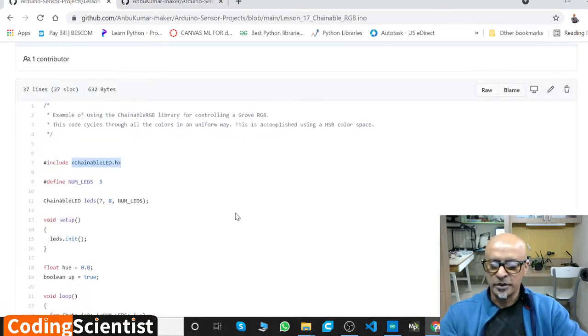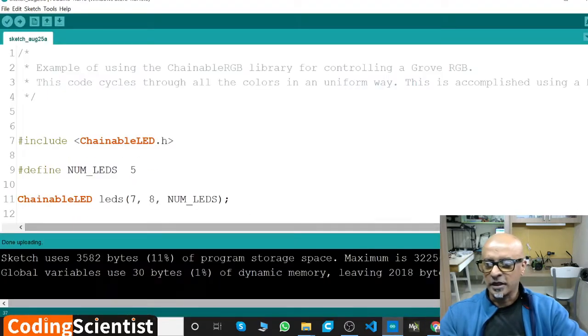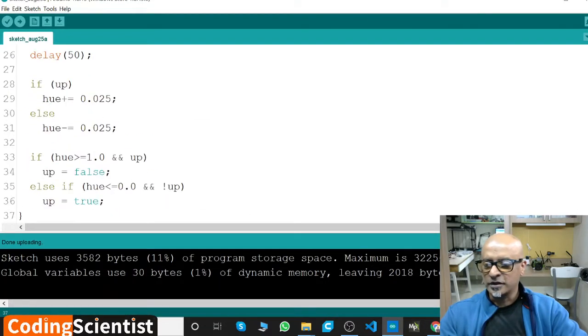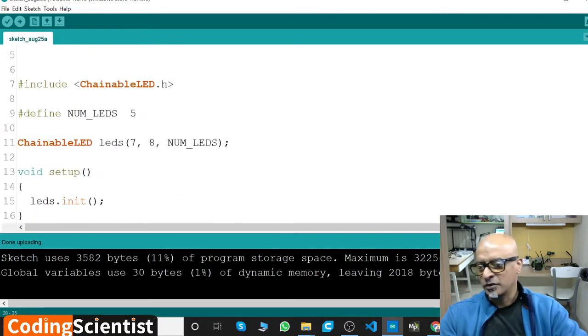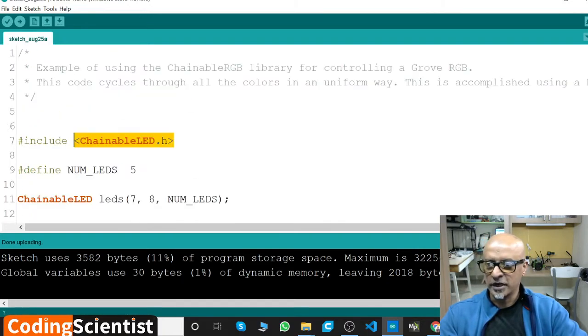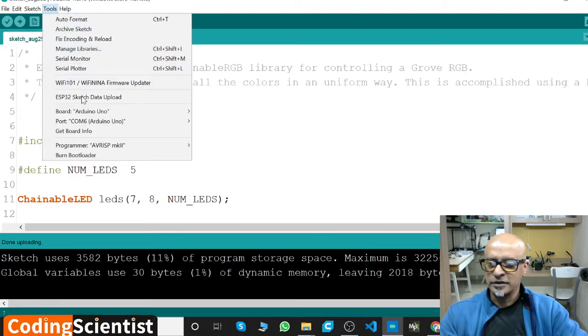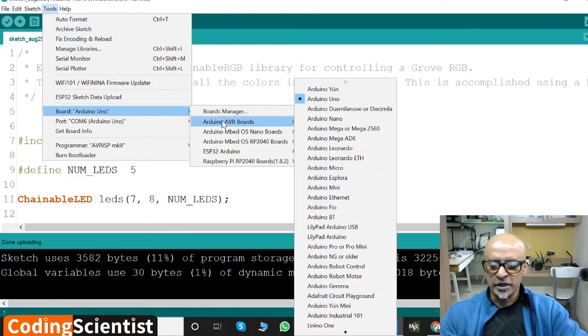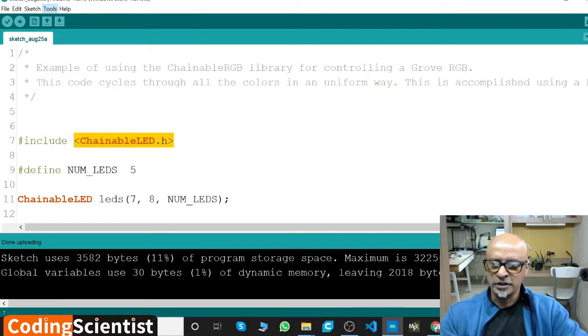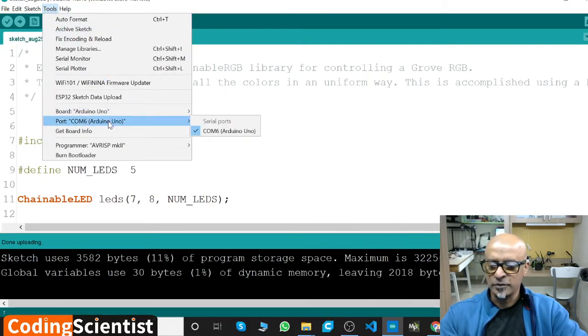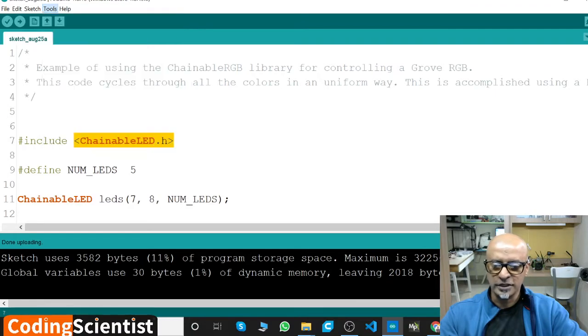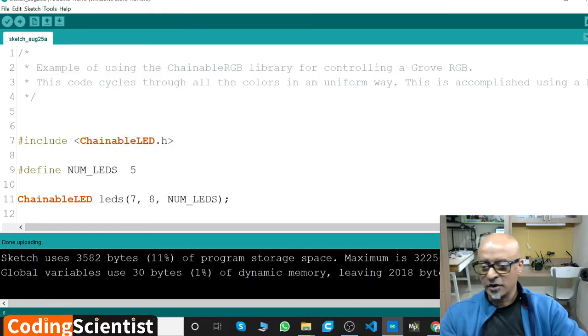Copy the code as usual, it's pretty easy. The code is straightforward, it pulls from your library file itself. Go to tools, select your board. Make sure to select your board, I am showing this in every lesson so you don't forget. Select your COM port, COM6 is mine, yours is different. Upload the code and you will get this action.